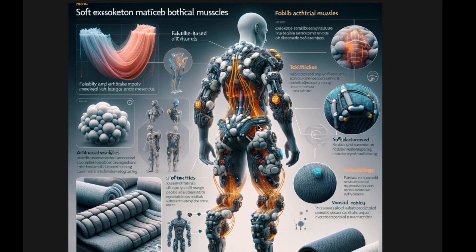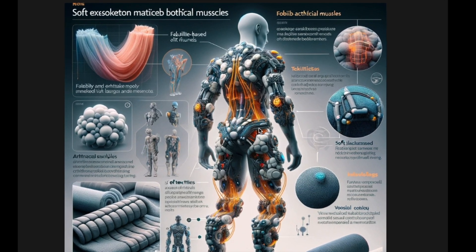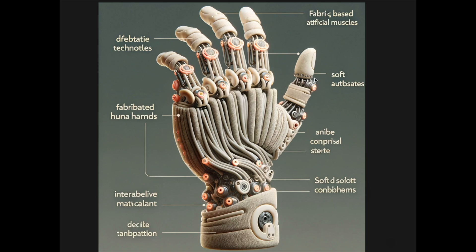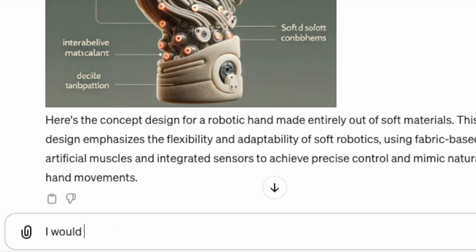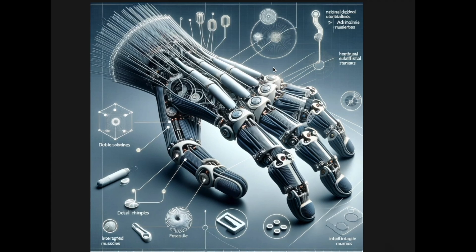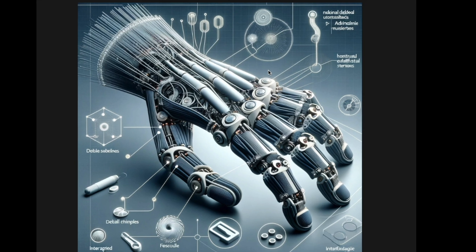Then I changed direction to focus more on smaller but specific parts — specifically the hand. I asked: 'Can you make a robotic hand made out of soft materials?' With an additional prompt requesting fewer strings outside and a smoother surface for the hand, this was the result.